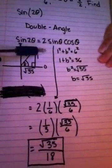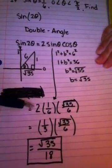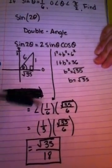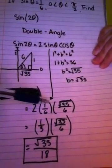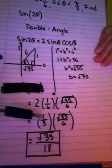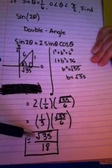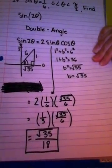Now, using this double angle formula, we plug in two times the sine, which is one-sixth, which was given, times the square root of 35 over six, which is the cosine. We multiply together and we end up with the square root of 35 over 18 as our final answer.